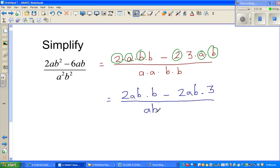In algebra, dot means times. Can I factor out this 2ab? If you factor out this 2ab, you got a 2ab sitting here, you got a 2ab sitting here. So you can write b minus 3 inside the bracket and the denominator I can write as 2ab times ab.